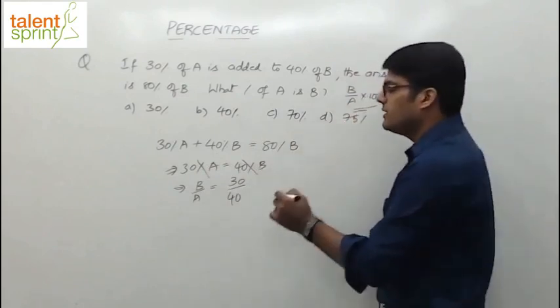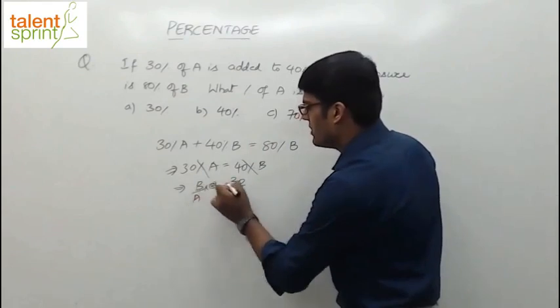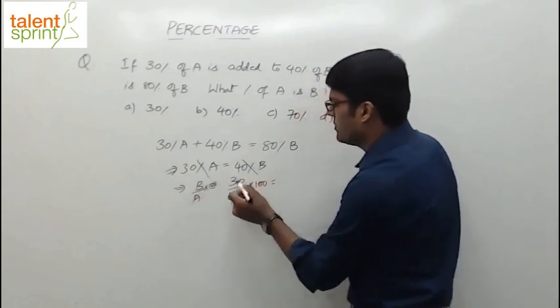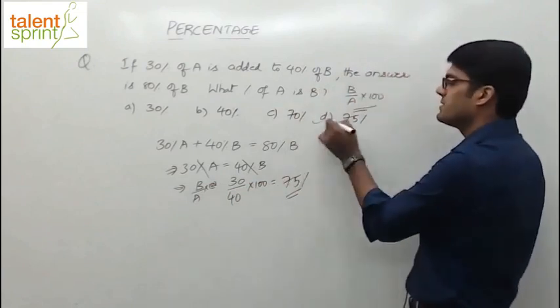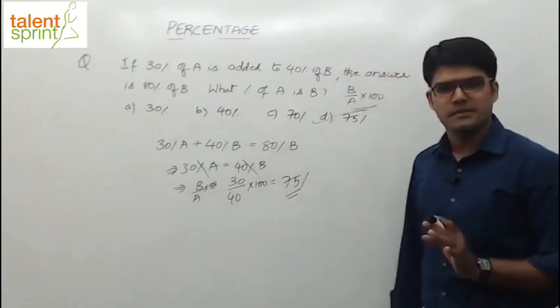So 30 by 40. We want B by A into 100, which is 30 by 40 into 100. That's 3 by 4 into 100, which is 75%. So option B is correct. Very simple.